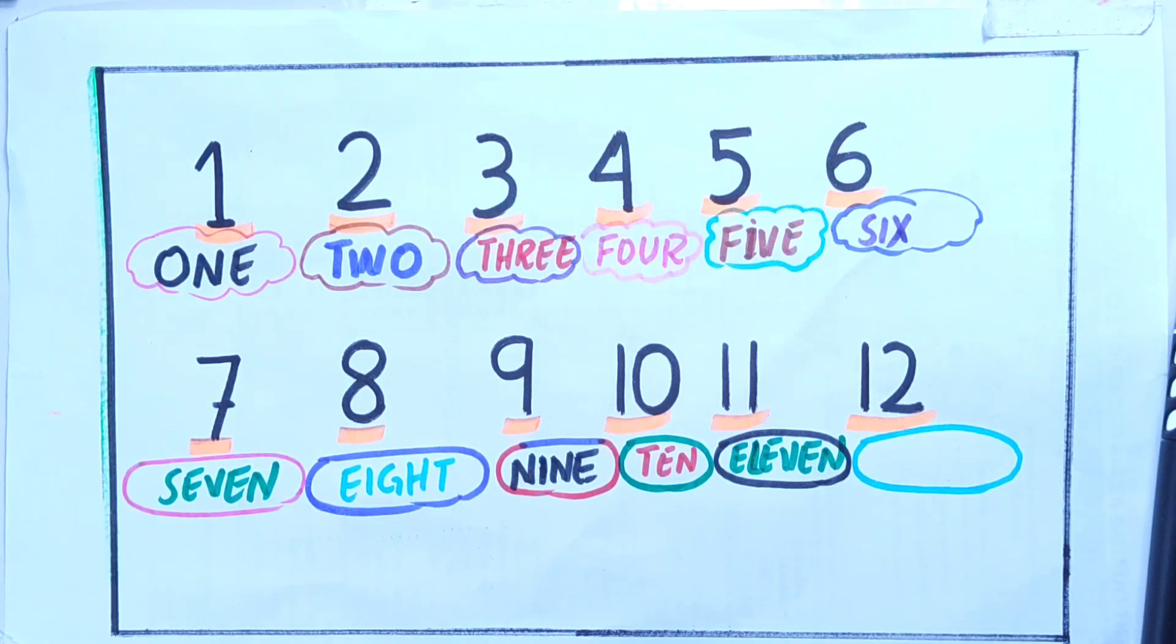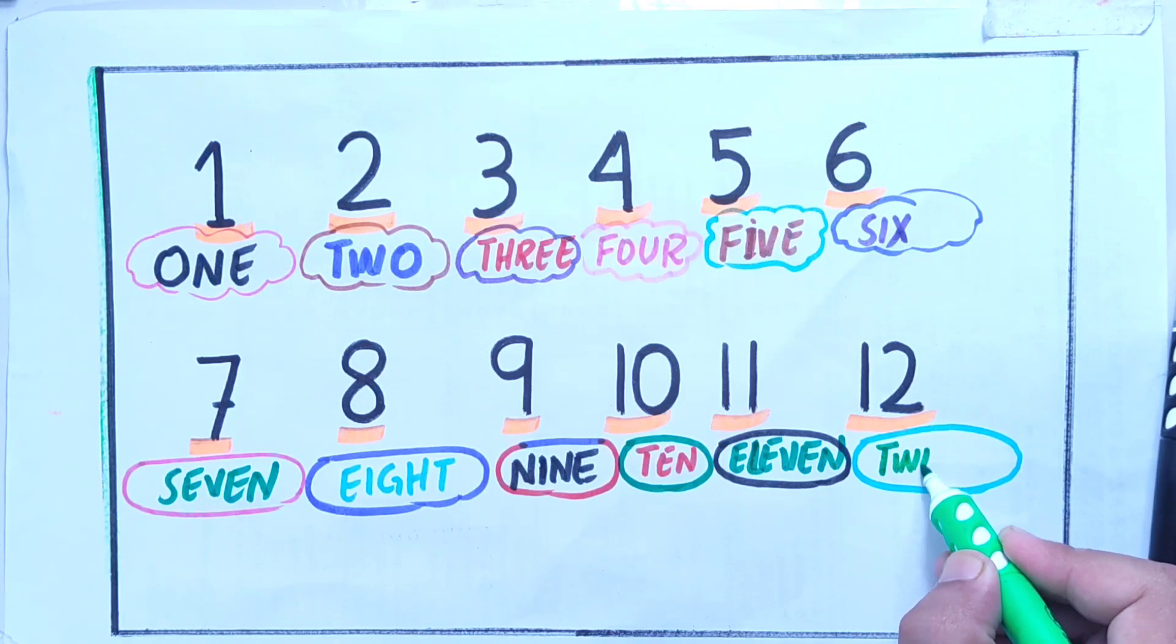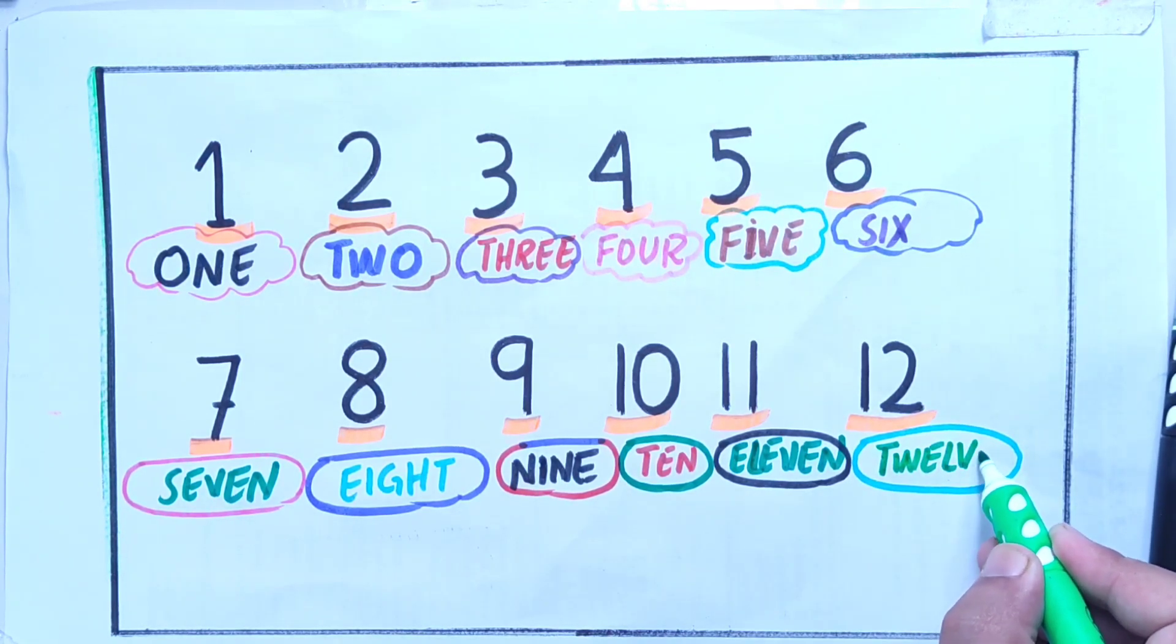And the last number in this case is twelve, so I will write it down with light green color. Twelve: T-W-E-L-V-E, twelve.